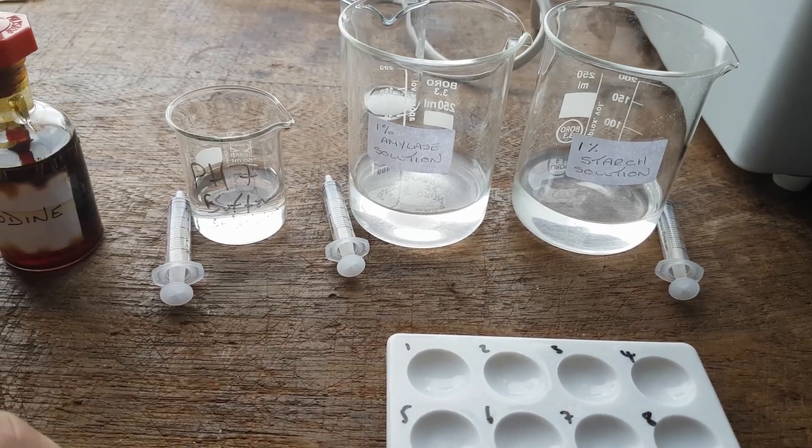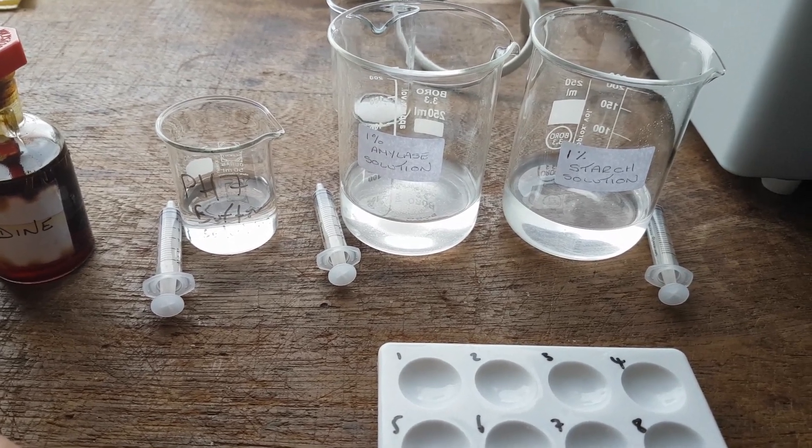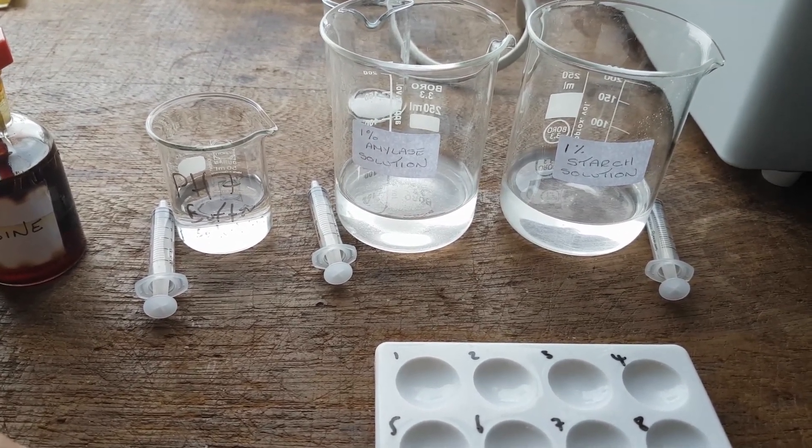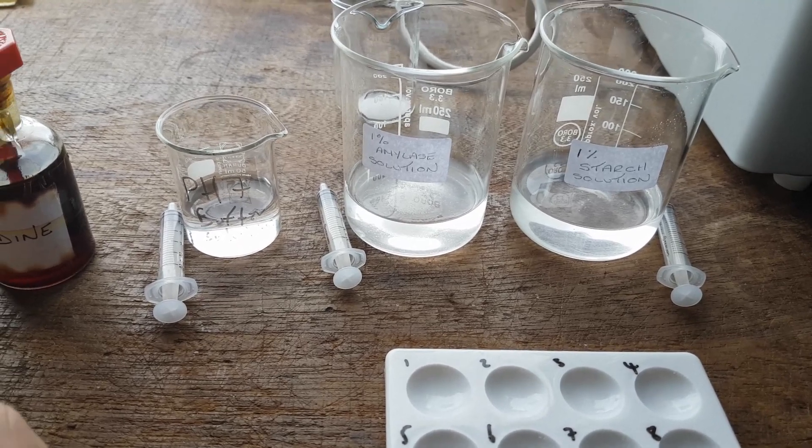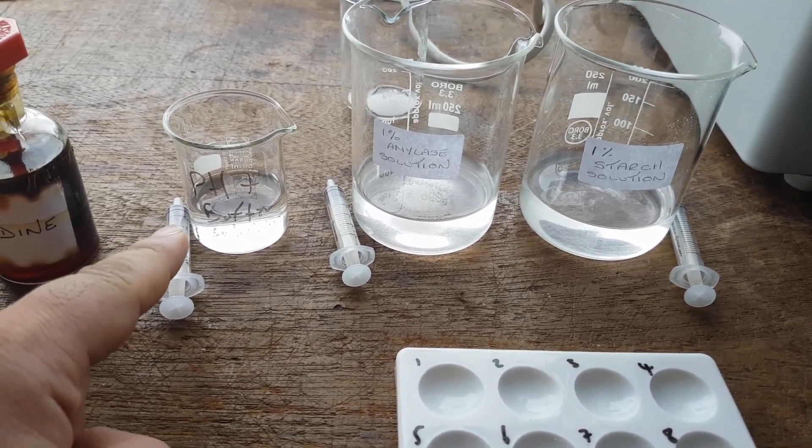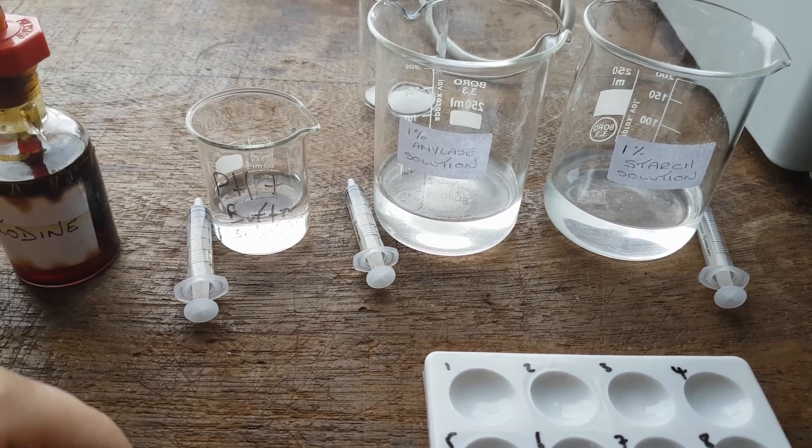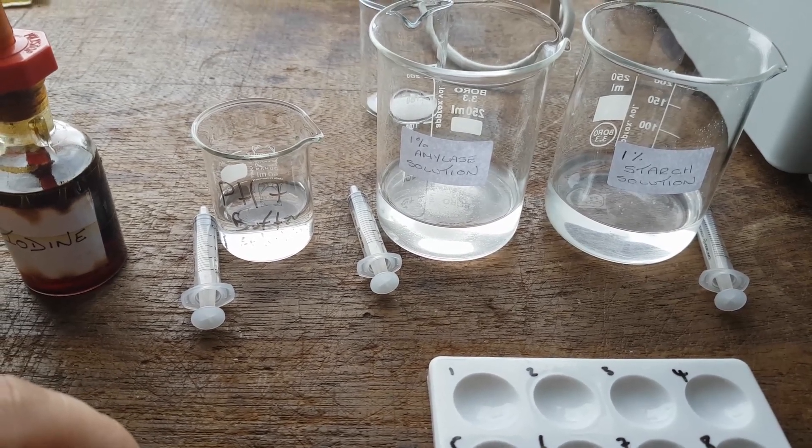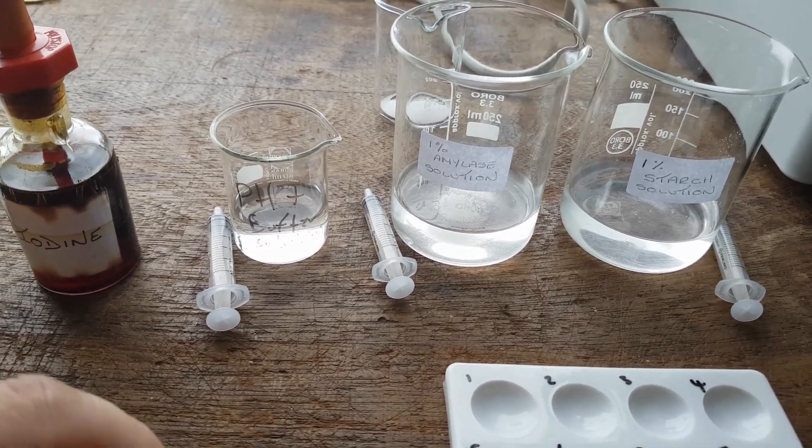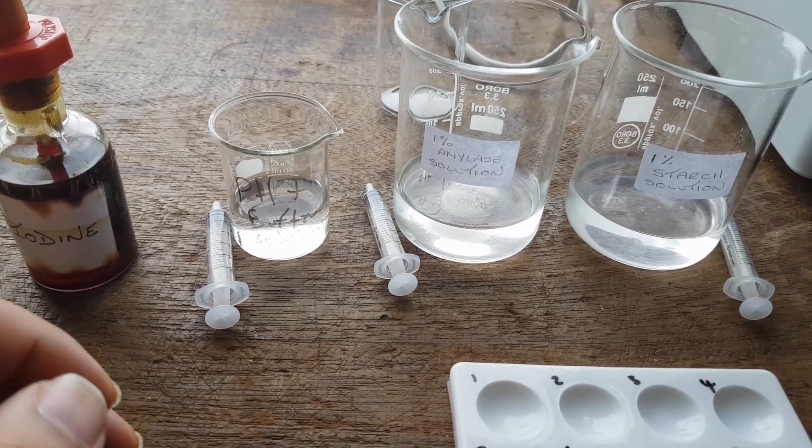Now it's important to note in an experiment, all variables must be controlled. That is to say, kept the same except one. You will be using loads of different pH solutions. So you'll be using pH 2, 3, 4, 5, 6, 7, 8. So the thing that's changing is the pH.